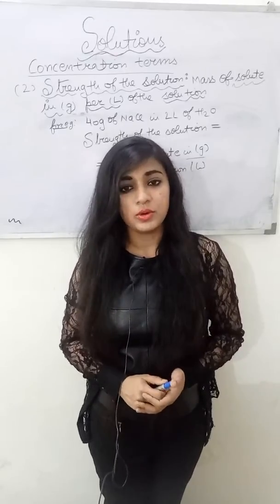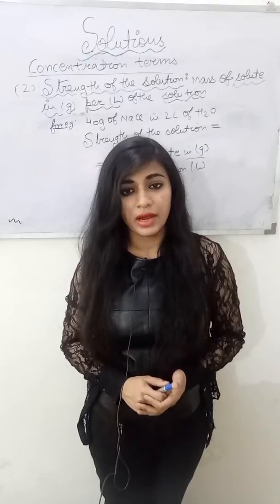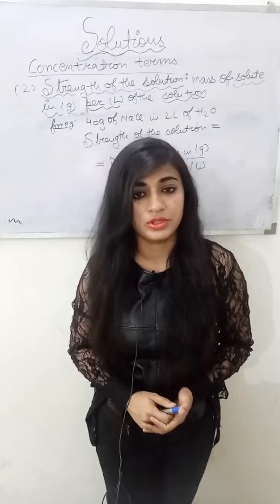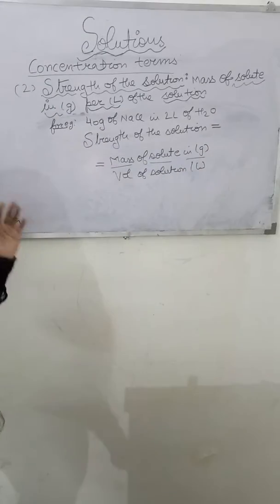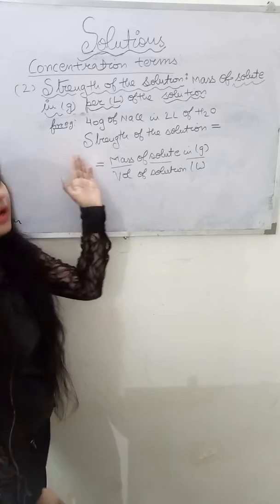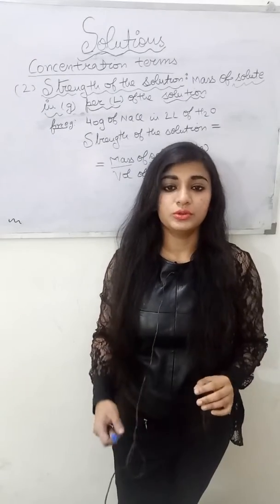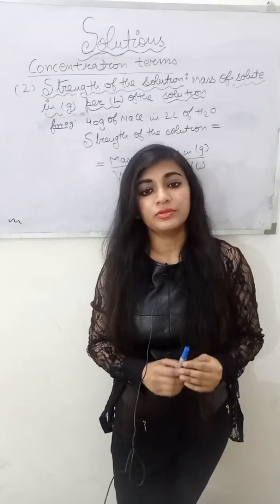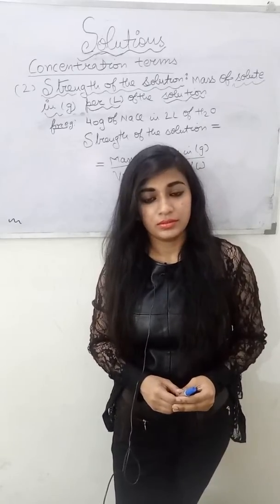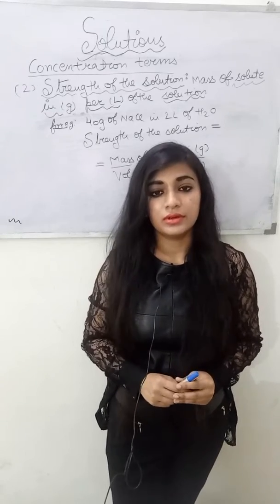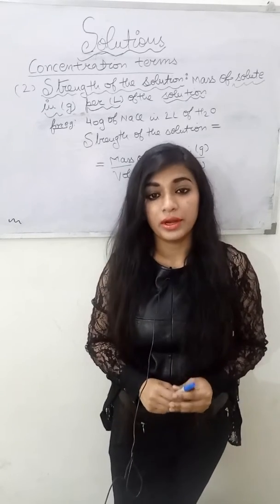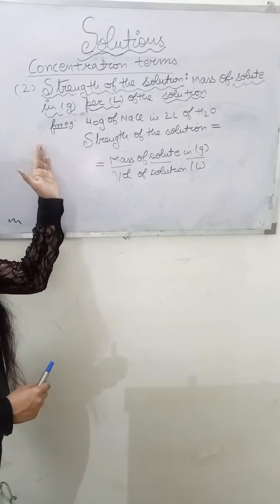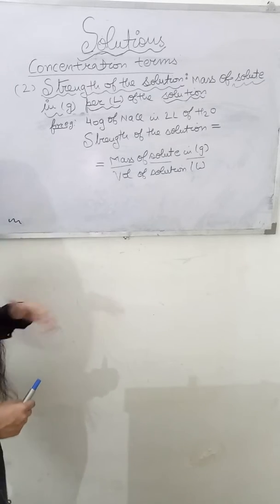The strength of the solution is the mass of solute in grams per liter of the solution. If you want to know the strength of a given solution, you take the mass or weight of the solute in grams, divided by the volume of the solution in liters. So: mass of solute in grams per liter of solution is termed as the strength of the solution.